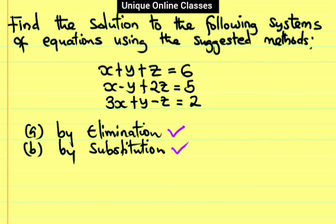The first system is: x plus y plus z is equal to 6, x minus y plus 2z is equal to 5, and the last one is 3x plus y minus z is equal to 2.